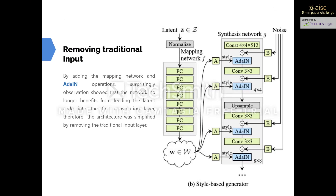Most models, including PROGAN, use random input to create the initial image of the generator. However, in StyleGAN the image features are controlled by a mapping network and adaptive instance normalization. Therefore, the initial input can be omitted and replaced by constant values. It's not entirely clear why this improves performance, but the assumption is that it reduces feature entanglement.